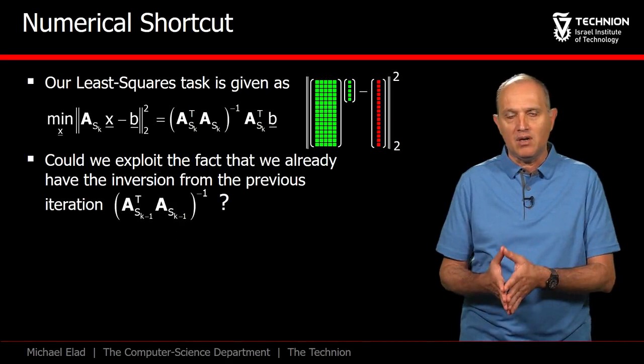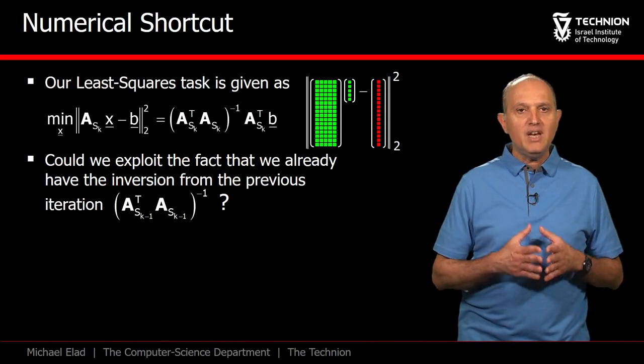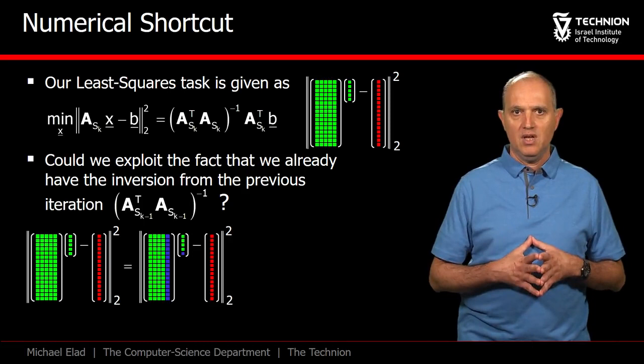one step before we inverted a similar matrix of size k minus 1 by k minus 1 that referred to Ask minus 1, with one atom less. Could we leverage the previous result in building the new one?